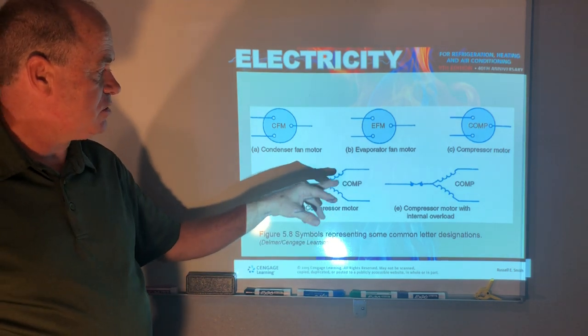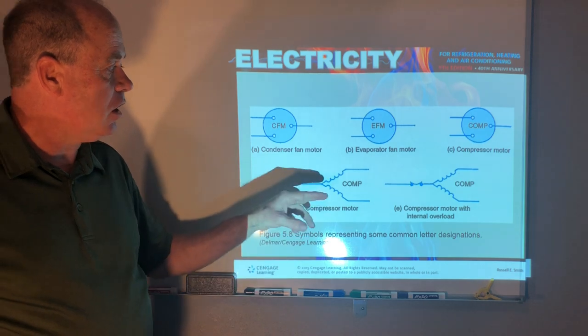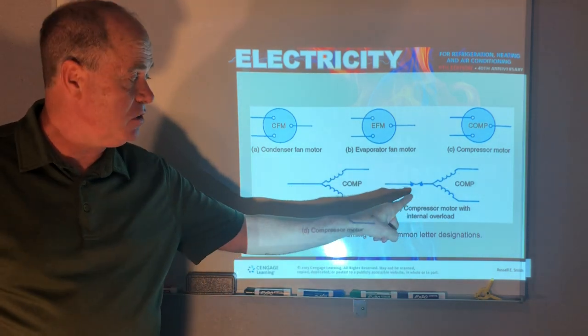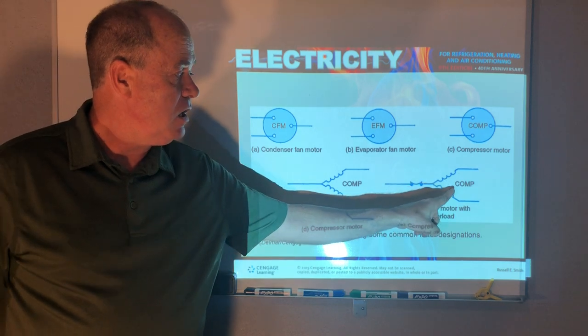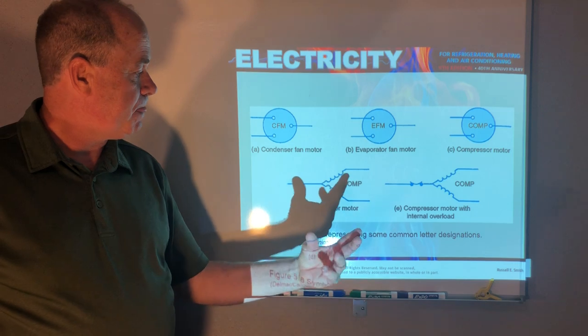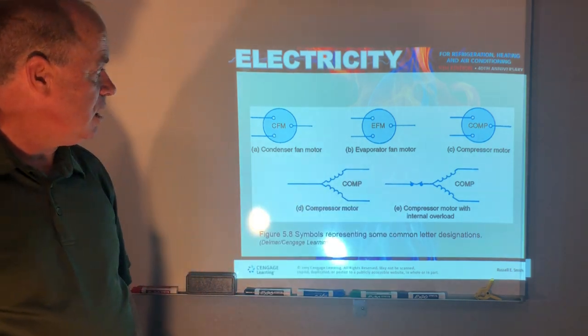Like here, this compressor has its run and start winding. This one does also, but it has an overload symbol. See how we have a symbol of an overload as a safety device to protect the compressor.